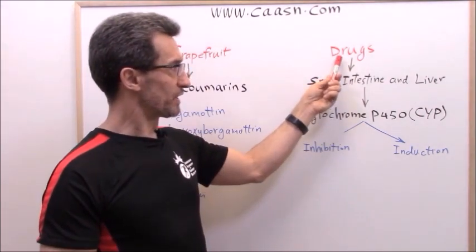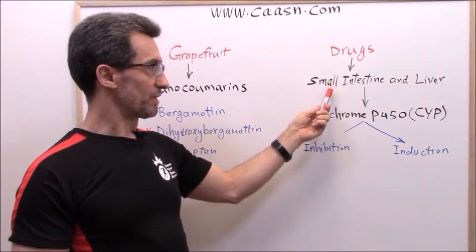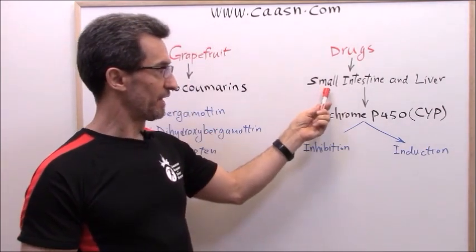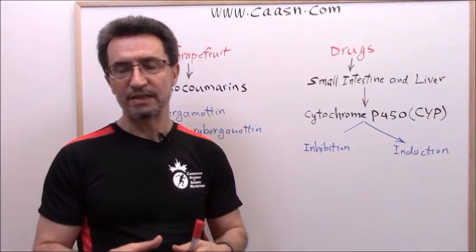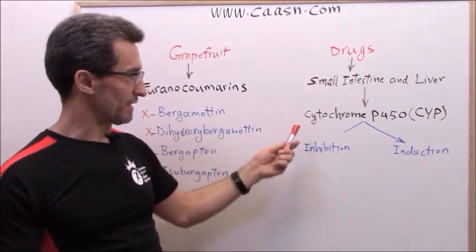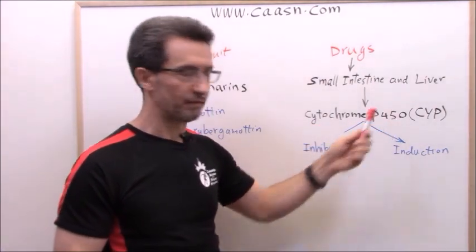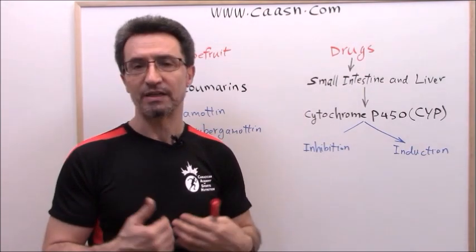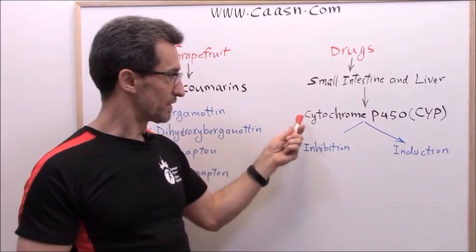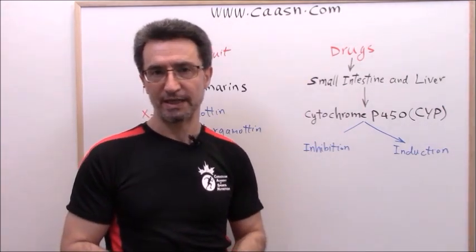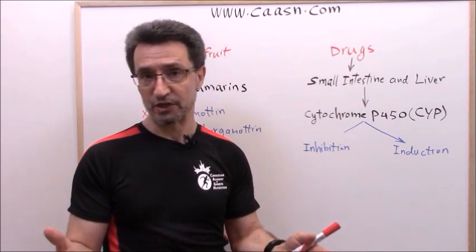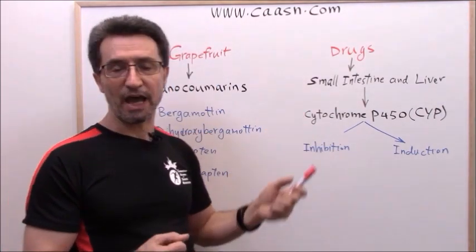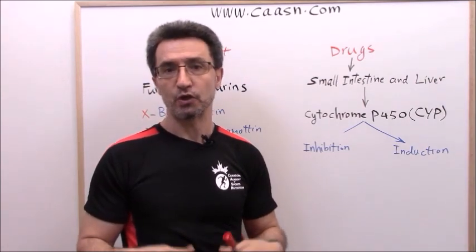When you take any medication, it goes to your small intestine and from the small intestine to your liver. In the small intestine and liver, we have an enzyme complex famous in medicine as cytochrome P450. This enzyme complex is responsible for metabolizing and breaking down most of the medications you take, and its activity is going to affect the metabolism of those medications.